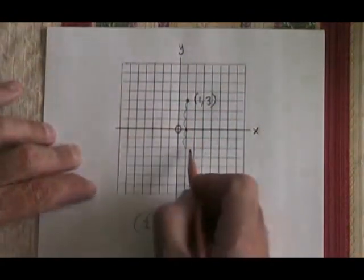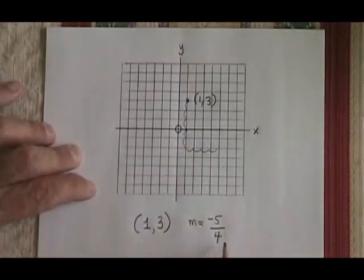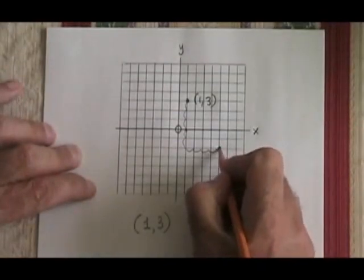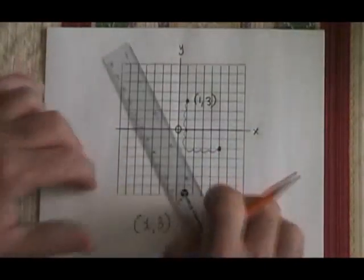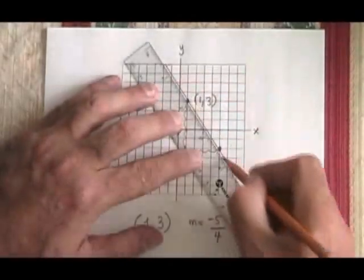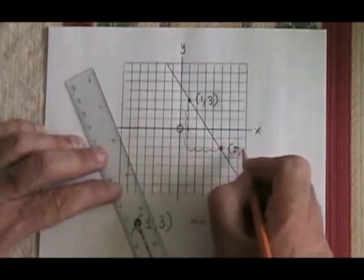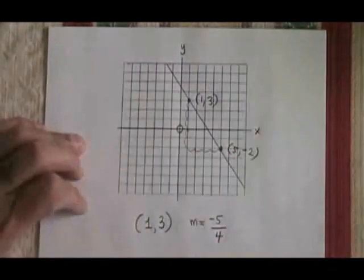And my run is 4. I still go to the right. I don't go to the left. The denominator is positive. I found a second point that's on my line. Draw my line. Identify that point, which has the coordinates 5, negative 2, and I'm finished.